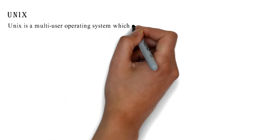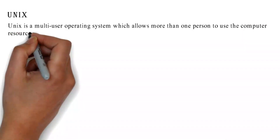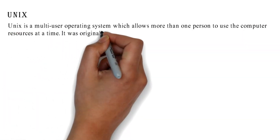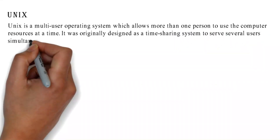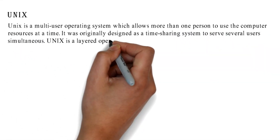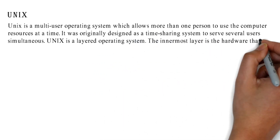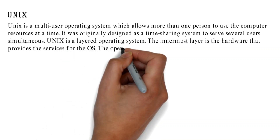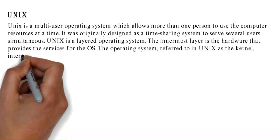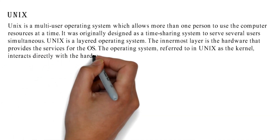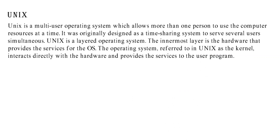Unix is a multi-user operating system which allows more than one person to use the computer resources at a time. It was originally designed as a time-sharing system to serve several users simultaneously. Unix is a layered operating system; the innermost layer is the hardware that provides services for the OS. The kernel interacts directly with the hardware and provides services to user programs.